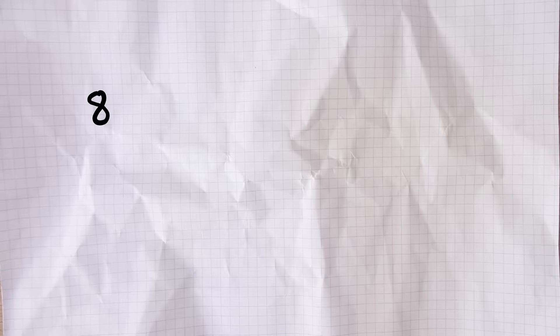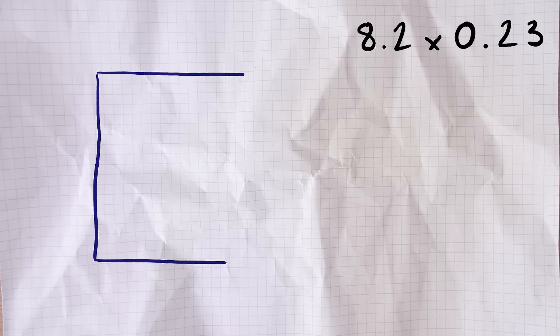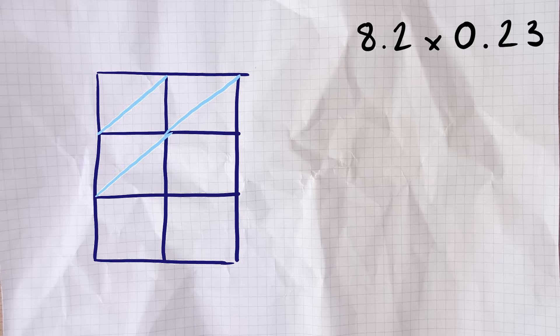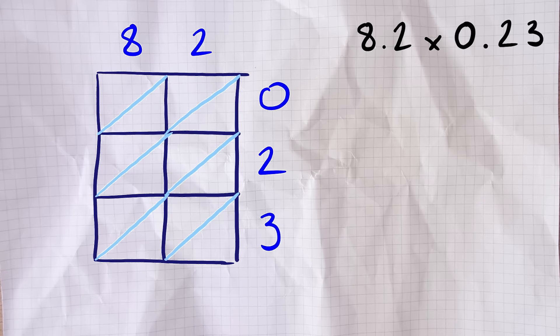The next example and we're into the decimals. The great thing is that the method is basically identical with just one little bit added at the end. We're going to do 8.2 times 0.23. I set it all out exactly as in the previous ones. In fact I don't even put the decimal points in until the end so it really is exactly the same. The grid with the 8 and 2 across the top and the 0, 2, 3 down the right hand side. Then I carry out all the multiplication inside and once that's complete I add the diagonals up just as I did before.